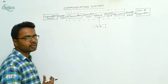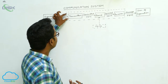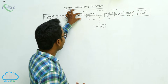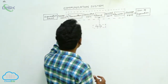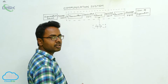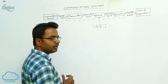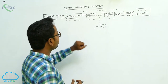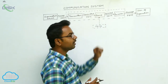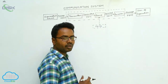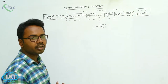Now, every communication system has three essential parts. This is the communication system shown in the dotted box, and it has three essential parts: the first is a transmitter, the second is a channel, and the third is the receiver.